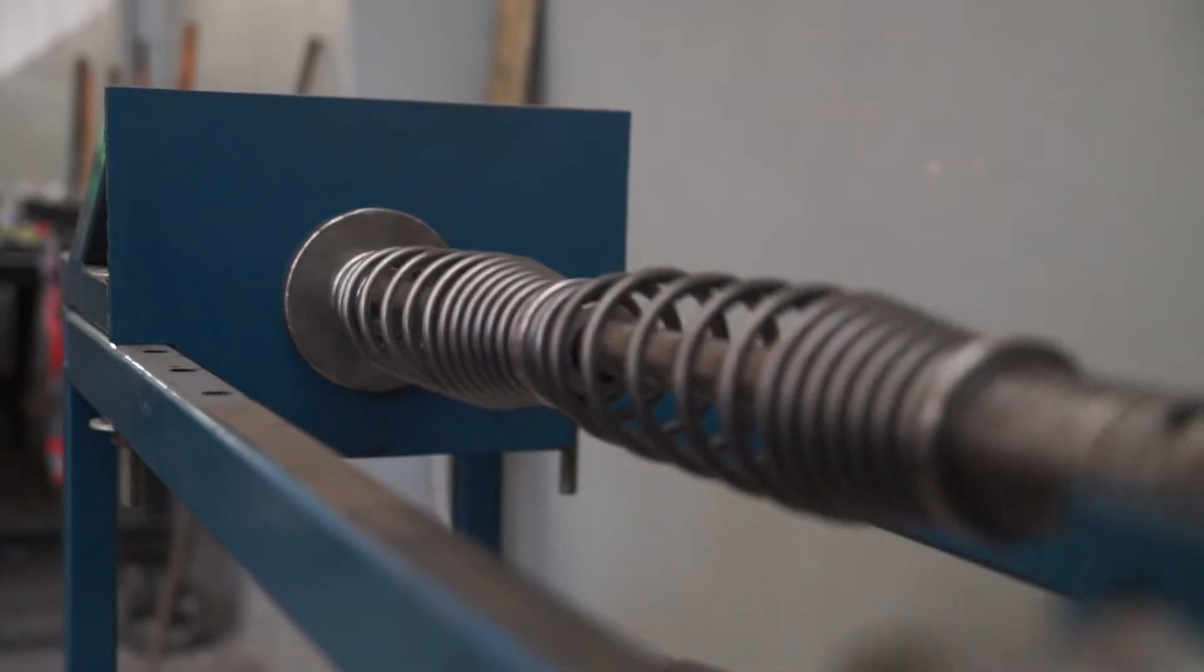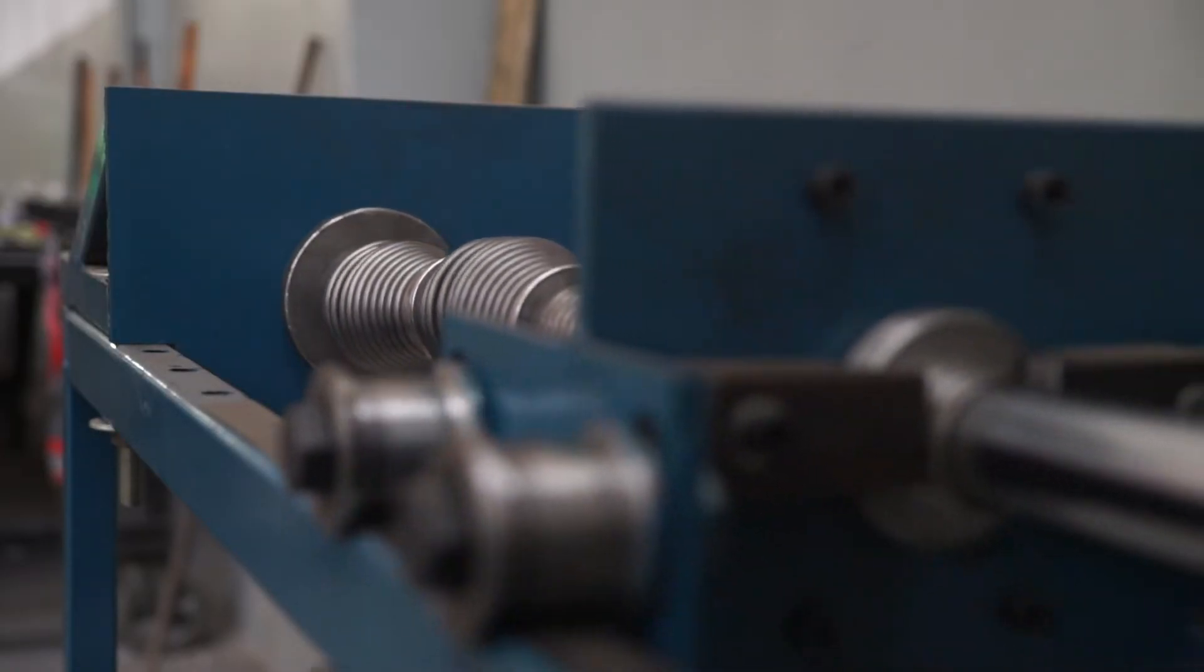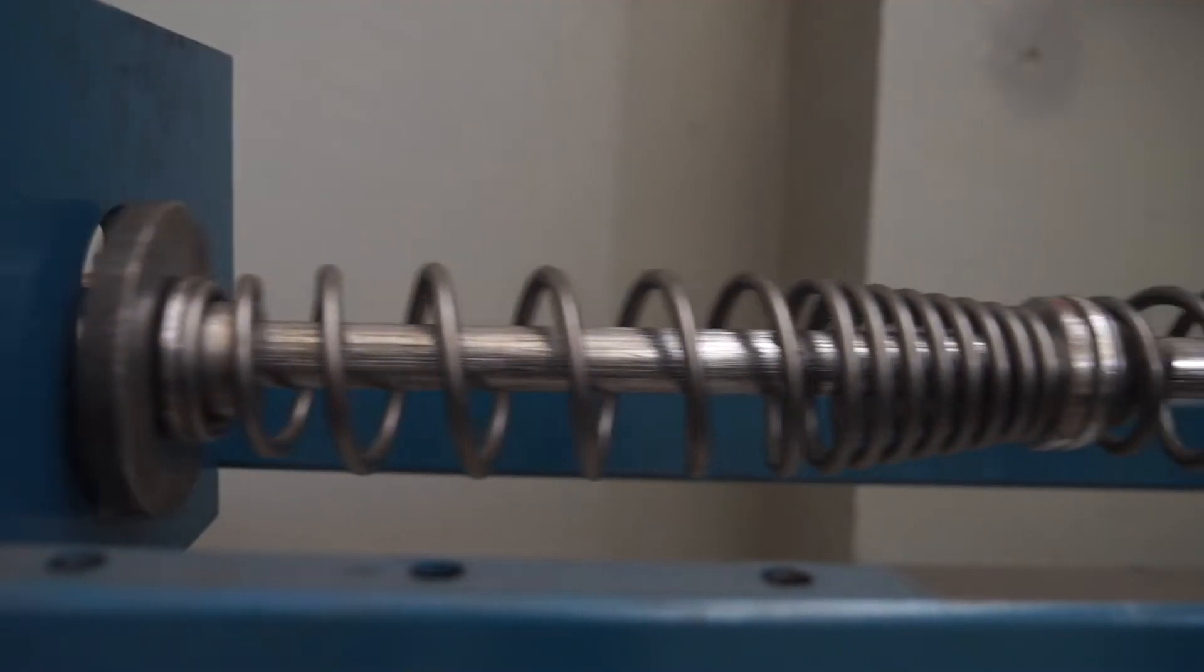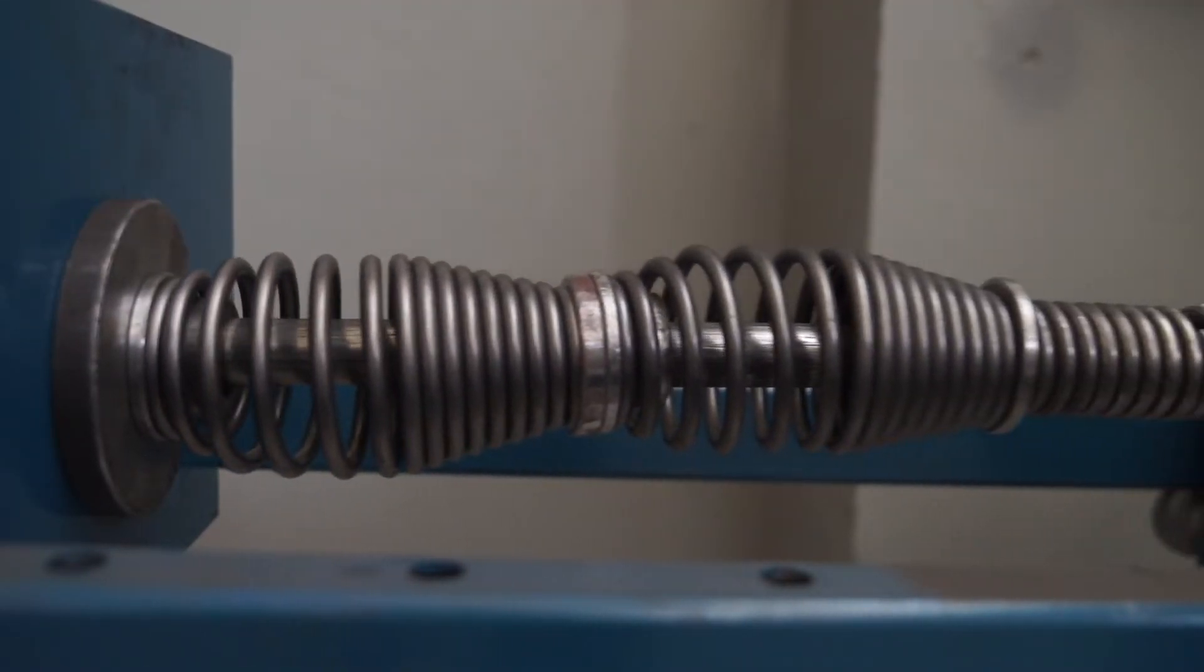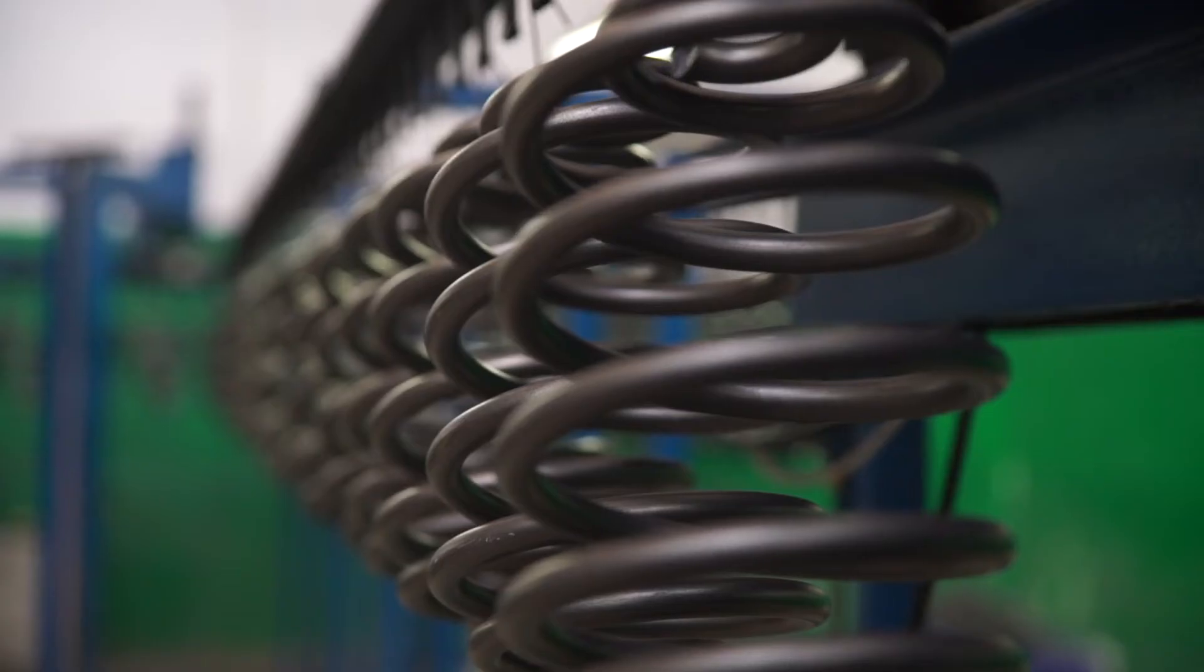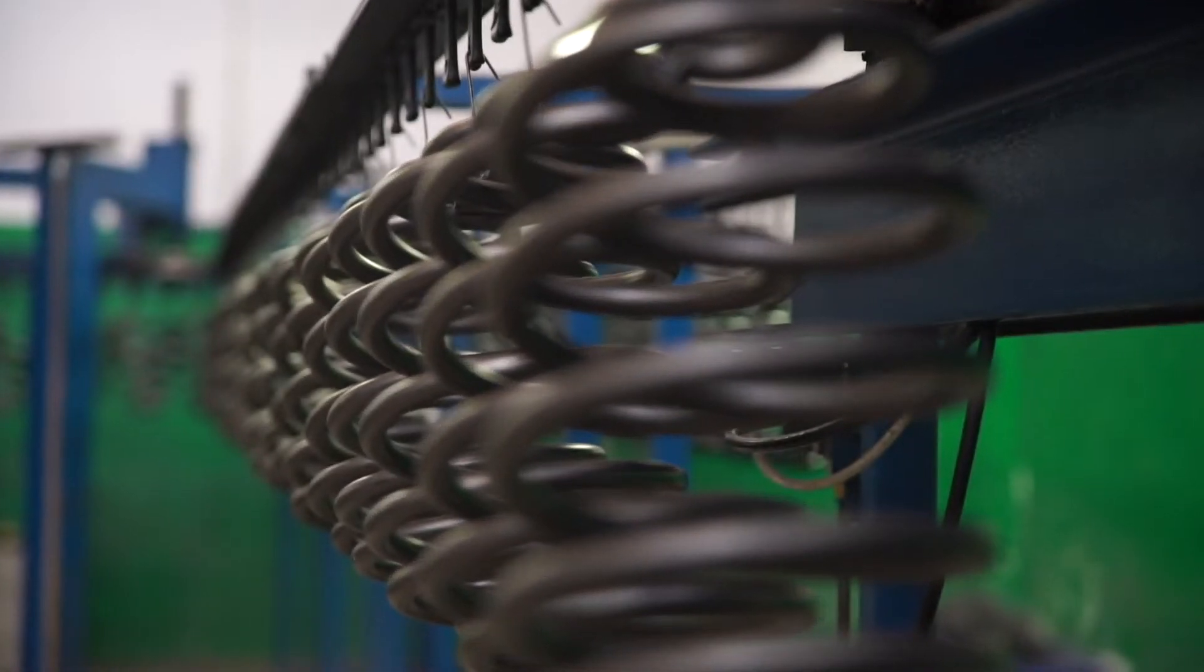The next step is pre-setting, that is compressing the spring to consolidate its length and elasticity. After pre-setting, the spring can be painted.